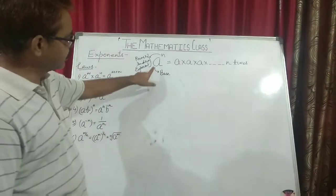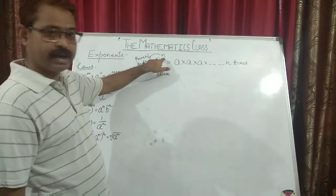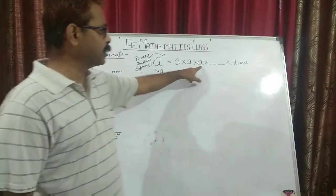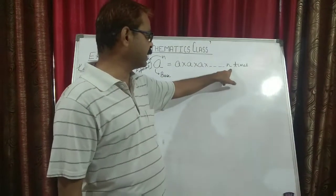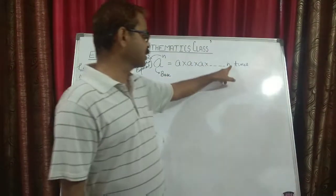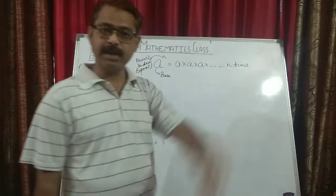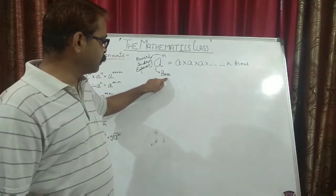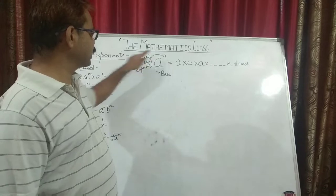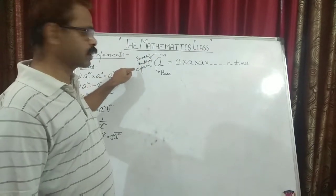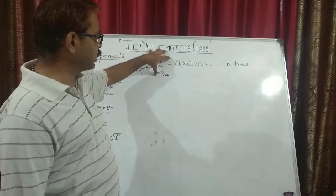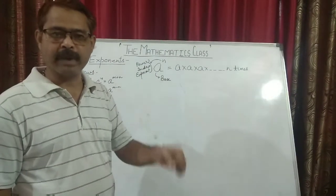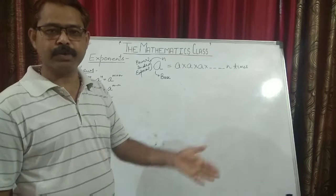First thing: if it is written a to the power n, you all know that it means a is multiplied to itself n times. So here, a means the base and n is known as power, or index, or exponent. This total — a to the power n — means exponential form.